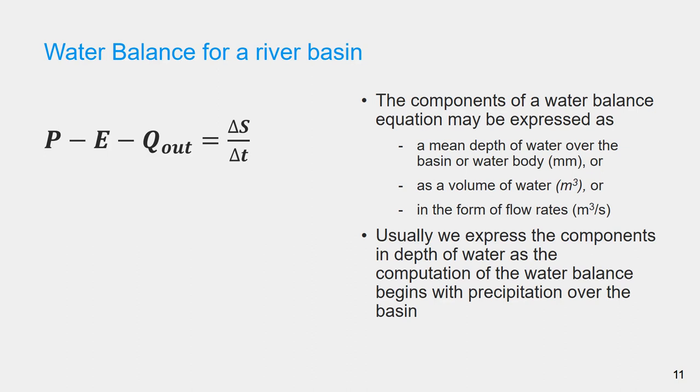Expressing the water balance components in flow rates is convenient for many water management communications. However, as the computation of water balance usually starts with the computation of mean precipitation over a basin, the other components are usually also expressed as depths of water.